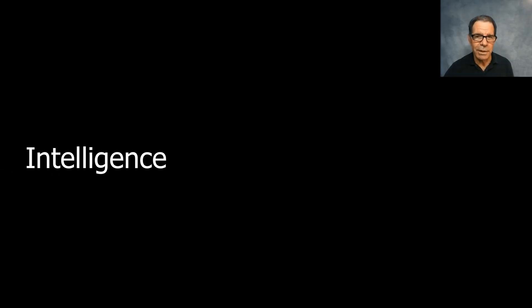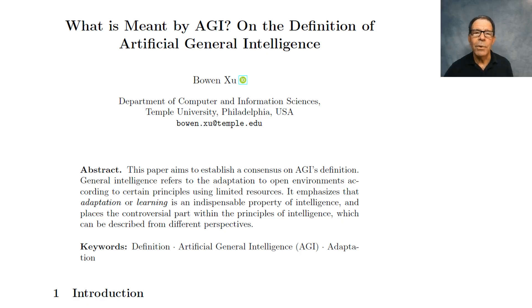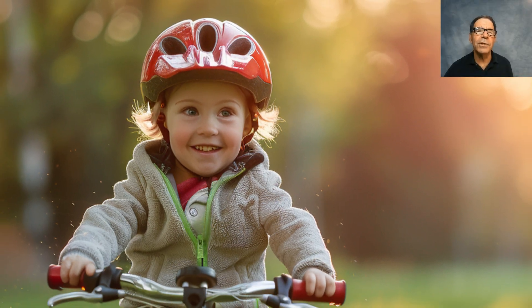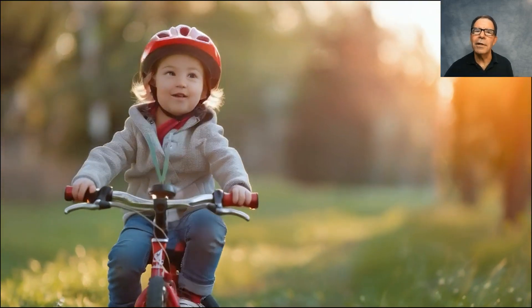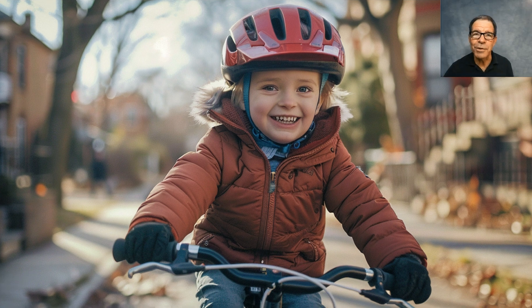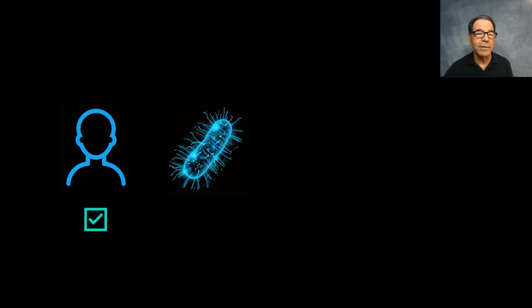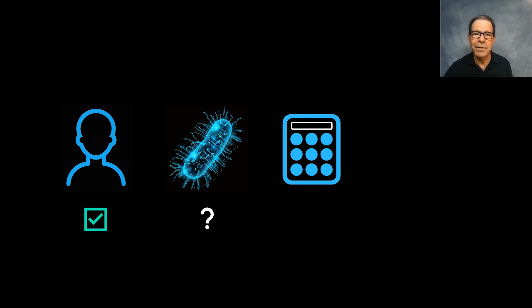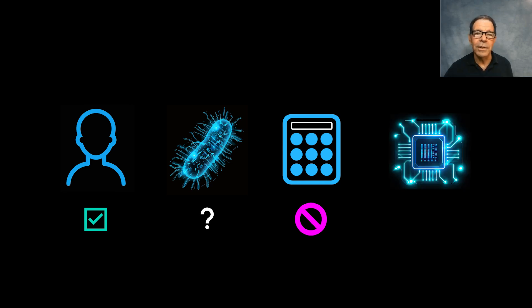Last is the word intelligence. In this paper, Bon Xiu presents the idea that for anything to be defined as intelligent, it must be able to learn and adapt to its environment. If it cannot learn, it's not intelligent, says Bon — which seems reasonable. By that measure, a human is intelligent. A microbe might be considered intelligent if it can learn and adapt. A calculator is not intelligent. And something we create out of silicon and computer code might be intelligent if it can learn and adapt.